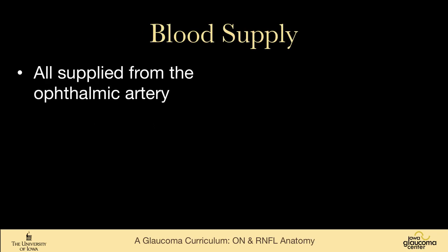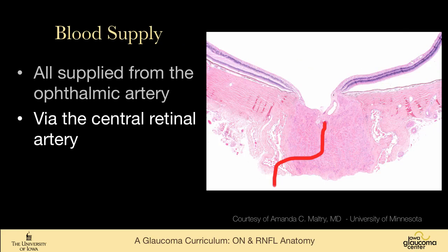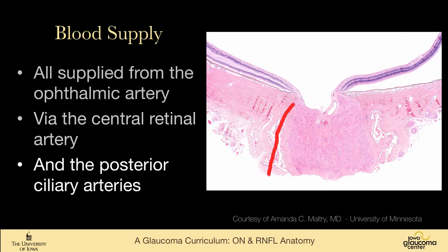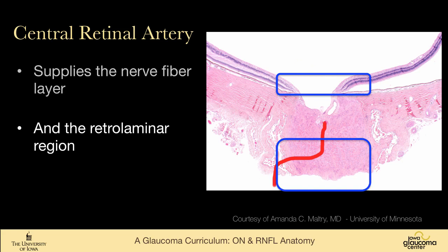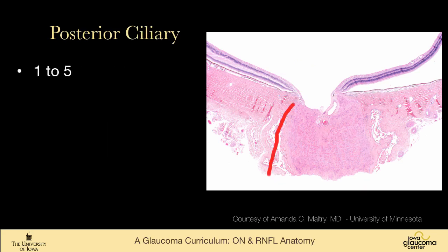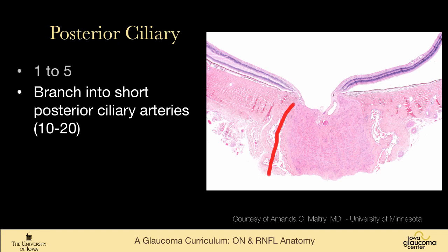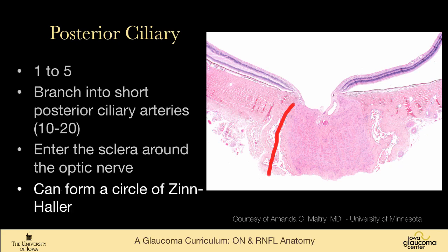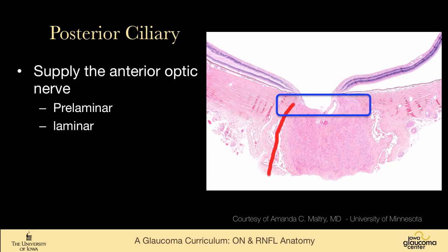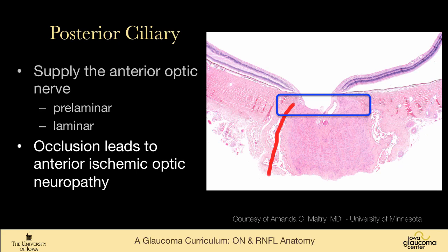All of the blood supply comes from the ophthalmic artery via the central retinal artery and the posterior ciliary arteries. The central retinal artery supplies the nerve fiber layer and the retrolaminar region of the optic nerve. The posterior ciliary arteries, of which there are 1 to 5, branch into short posterior ciliary arteries — 10 to 20 of those enter the sclera around the optic nerve and can form a circle called the circle of Zinn-Haller. They supply the anterior optic nerve, the prelaminar and laminar regions. Occlusion of the posterior ciliary arteries can lead to anterior ischemic optic neuropathy.